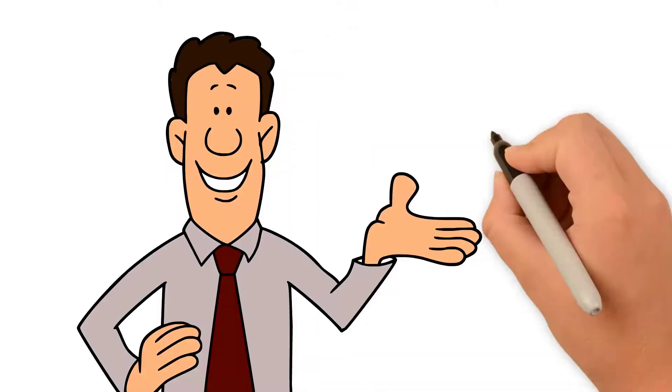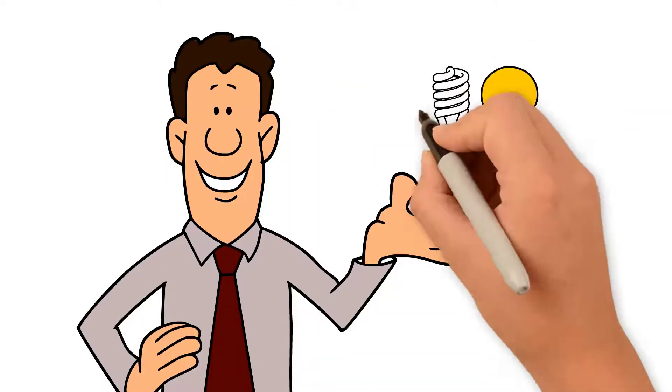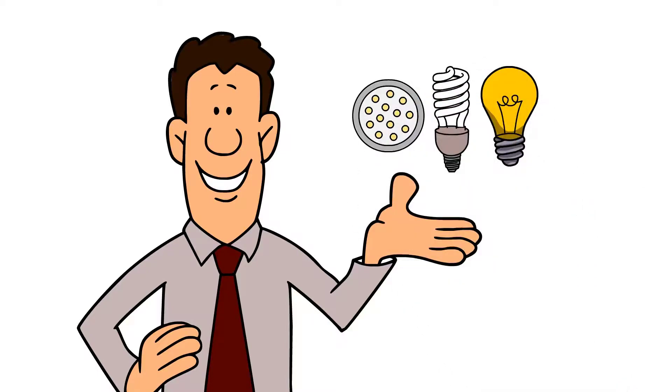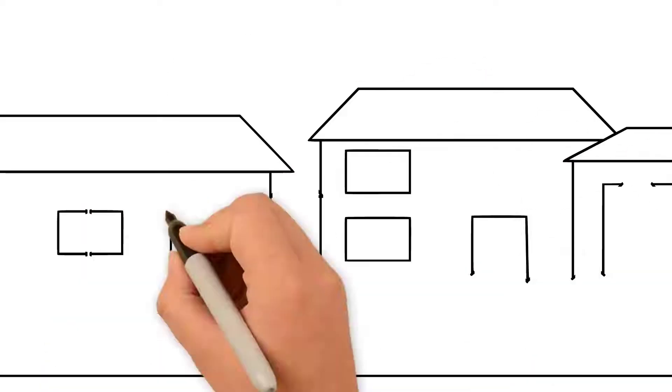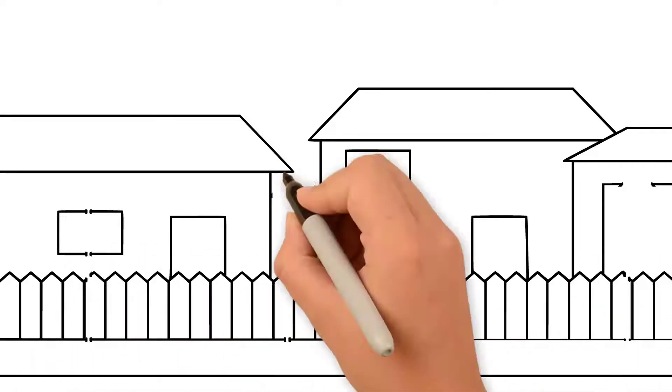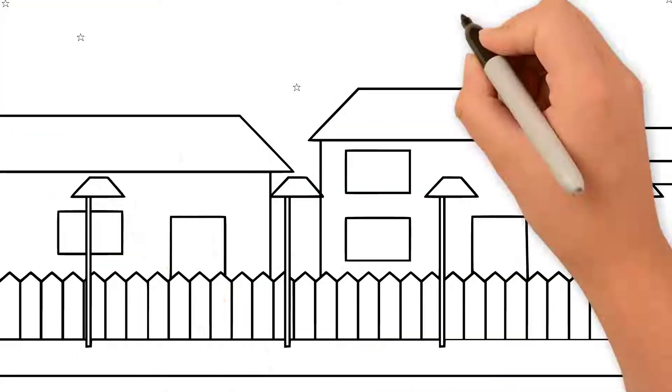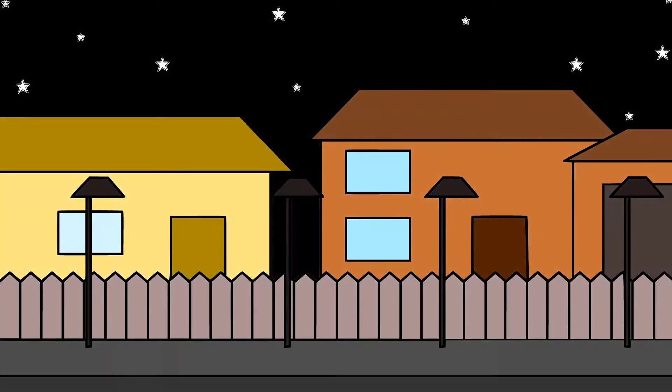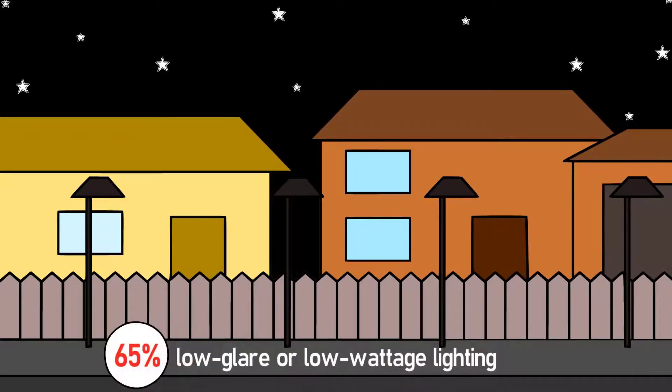The great news about light is it's one of the easiest pollutions to dramatically reduce the effects of. Along with personal goals of saving energy, many governments are passing legislation that requires installation of shielded light fixtures that emit light only downward, while other laws require the use of low glare or low wattage lighting. This law alone reduces light pollution by almost 65%.